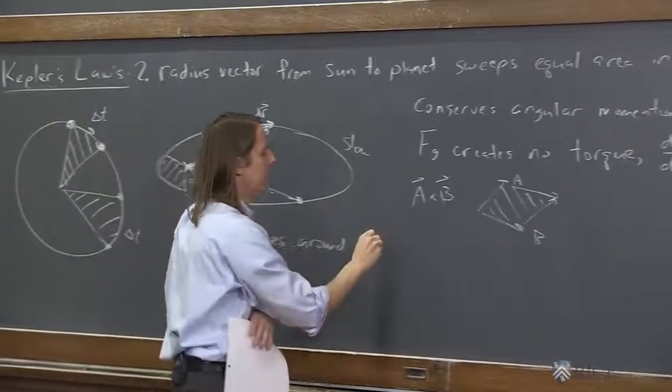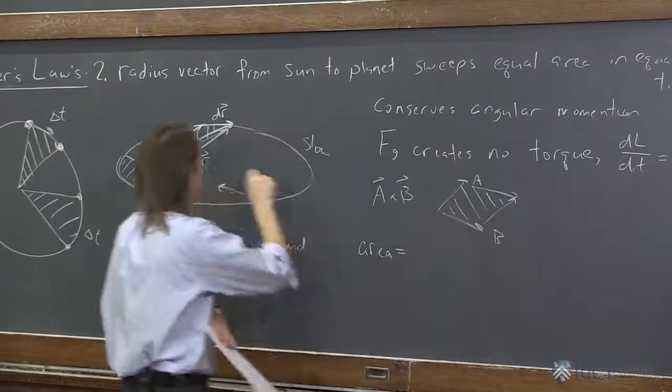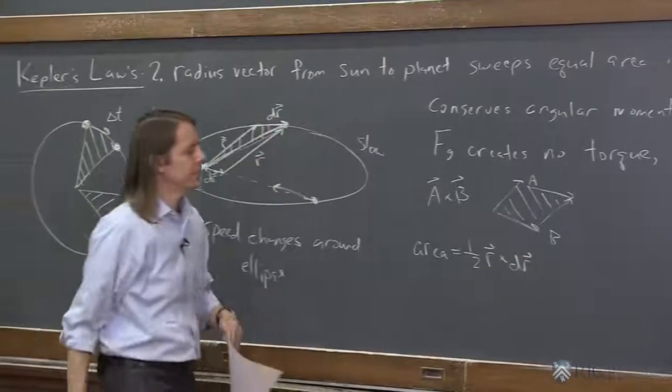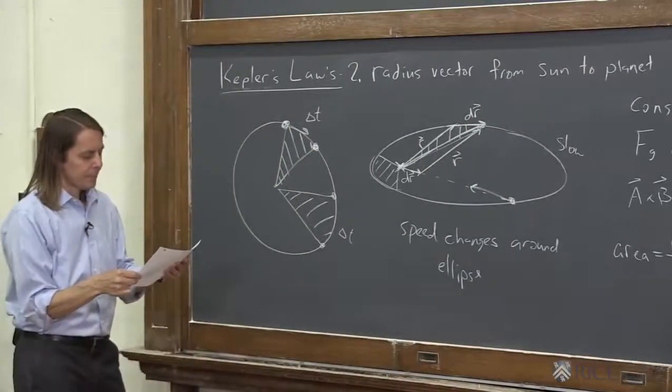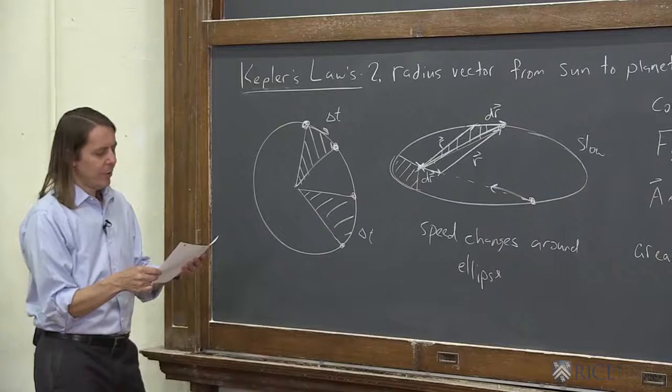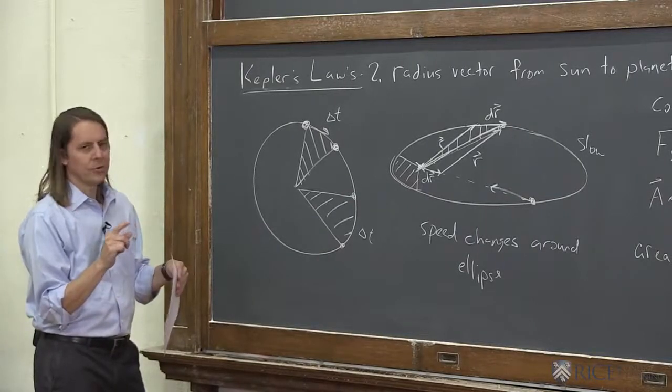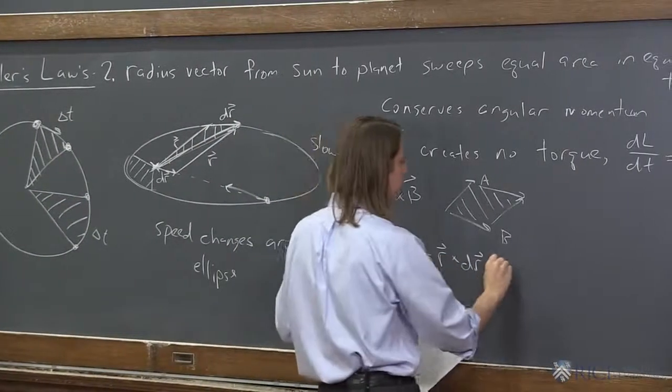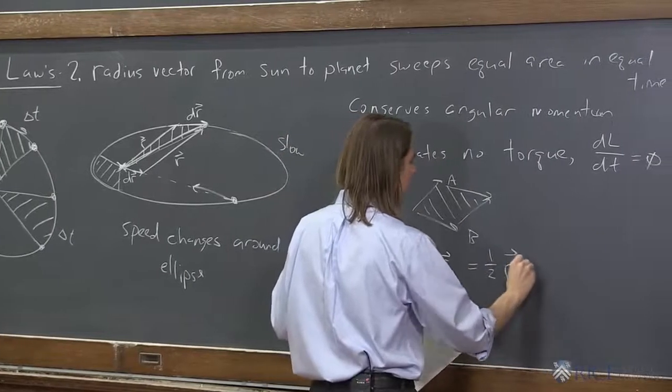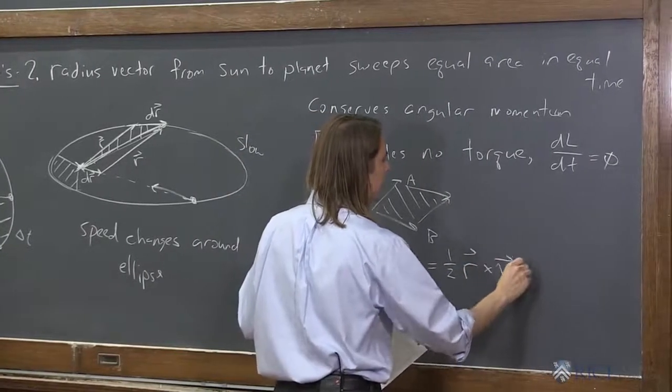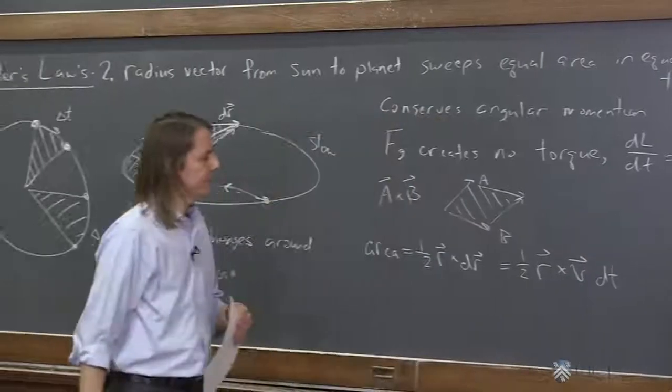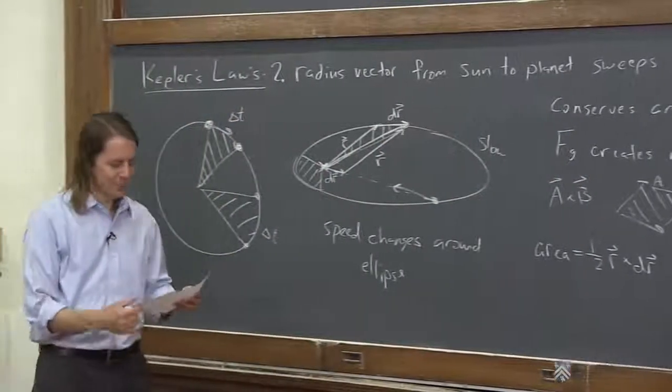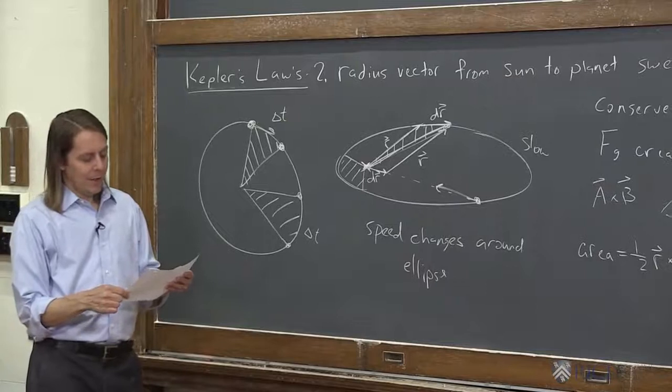So we're going to use that idea here. We're going to realize that the area is equal to a half of the parallelogram of r cross dr, right? And then we're going to say, wait a minute, dr is proportional to the velocity, right? So dr dt is the velocity. So we could say is one half of r cross v if we multiply it by dt, right? Because this is dr over dt times dt. It kind of works out. We're not doing this real formal like that.